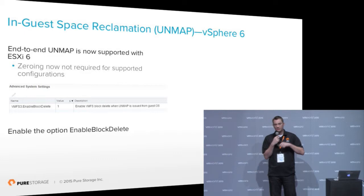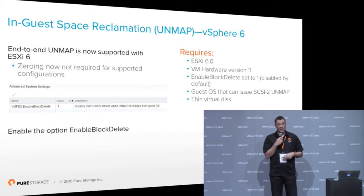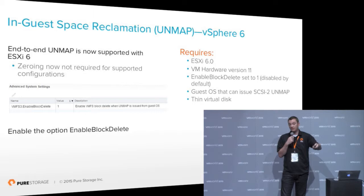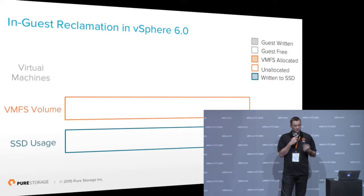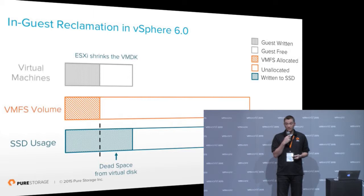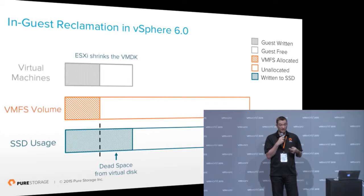So what's been done in vSphere 6? End-to-end UnMap is now supported in vSphere 6 within virtual disks. If they're using ESX 6, VMware hardware version 11, and that guest can support SCSI 2 UnMap, and it's a thin virtual disk, you can issue UnMap automatically from the guest down to the VMware layer and have that translated down to the physical device to reclaim that space. That Enable Block Delete parameter — the one that initially allowed automatic UnMap — was reused for this purpose. When the guest issues UnMap, it's going to reclaim that space on the VMFS so the VMDK shrinks, and then the underlying storage is reclaimed automatically by ESX. If Enable Block Delete is not enabled, which is the default, it stops at the VMFS layer and you can run the traditional ESX CLI UnMap to remove it.